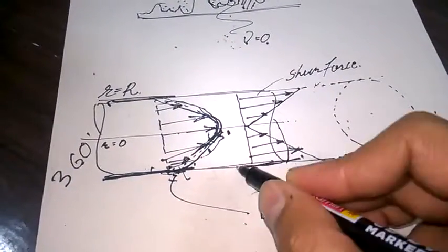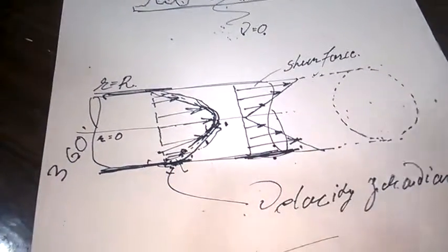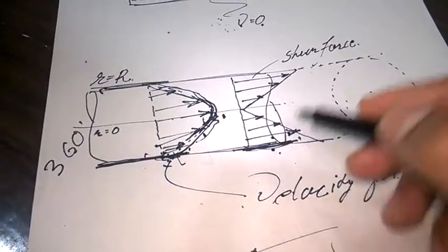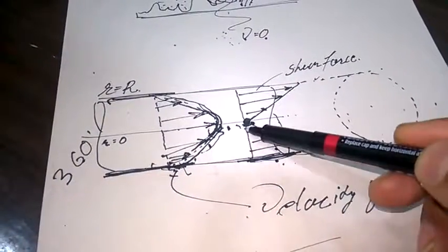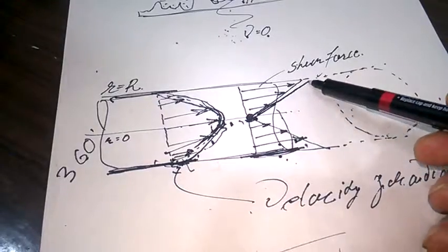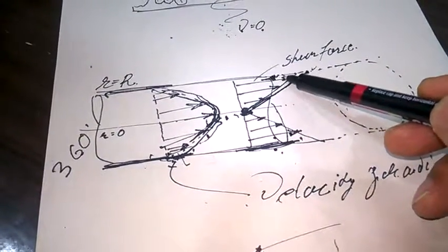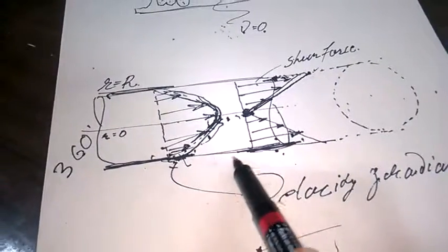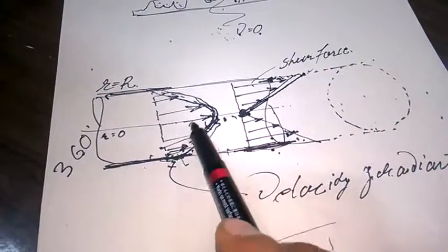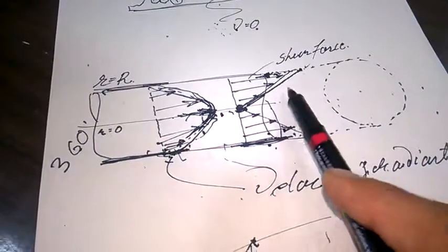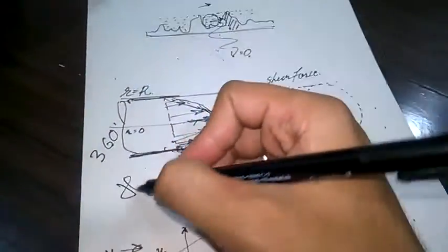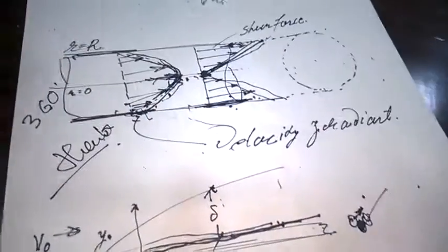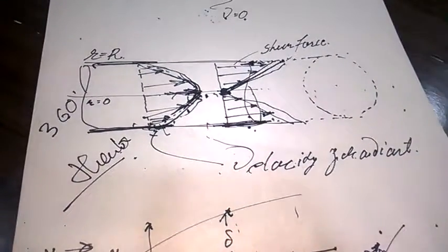At the pipe surface, velocity is zero and there is maximum shear force in the adjacent layer. At the center, velocity is at the free-stream value so shear stress is minimum. Then shear stress increases again toward the opposite surface due to another stagnation layer. The shear force diagram looks like this. Thanks for watching — please like, share, subscribe, and comment.